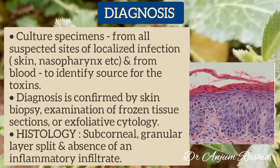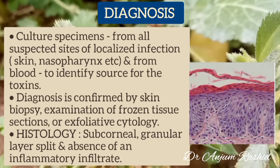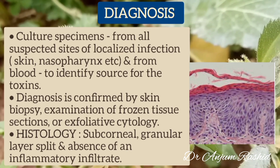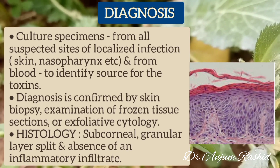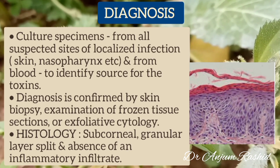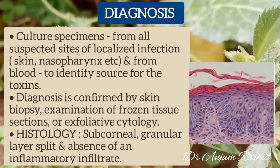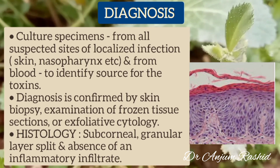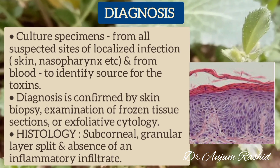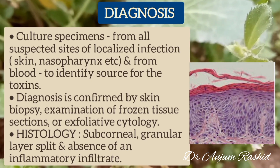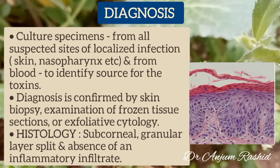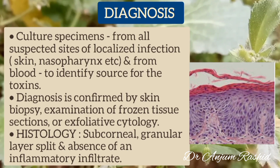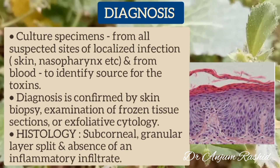Regarding diagnosis, culture specimens should be taken from all suspected sites of localized infection and from the blood to identify the source of the toxin. The diagnosis is confirmed by skin biopsy, examination of frozen tissue sections, or exfoliative cytology. On histopathology, there is subcorneal granular layer split and absence of inflammatory infiltrate.